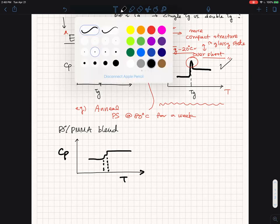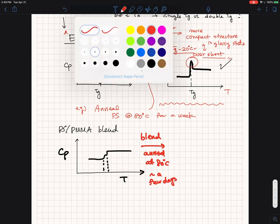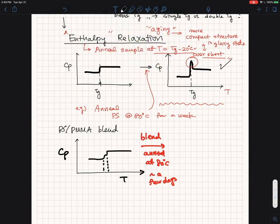But if you do the, essentially you blend your sample, blend, anneal at 80 degrees C for, you know, in a few days in a thermal chamber, and then what you are going to see is quite interesting.